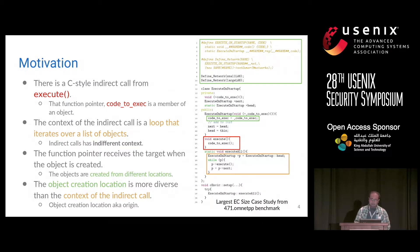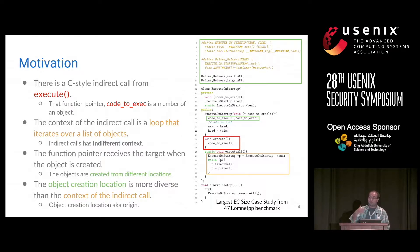If we look into where the object — where the code pointer gets its target value — we can find that the assignment operation is inside the constructor function of execute on startup. This assignment target is actually received by argument passing from the constructor call sites. So if we can connect those two pieces of information, the origin and its own context, then we can precisely find out which object should call which target at this indirect call point inside the execute method.